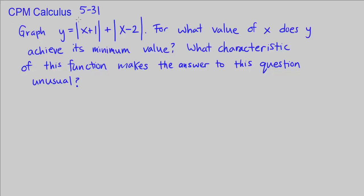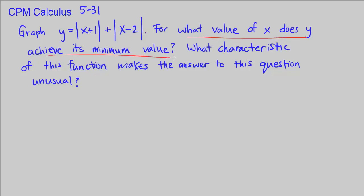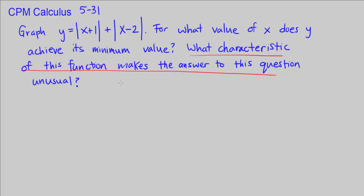This is CPM Calculus Chapter 5, number 31. We're asked to graph the absolute value of x plus 1 plus the absolute value of x minus 2, then answer: for what value of x does y achieve its minimum value? Also, what characteristic of this function makes the answer to this question unusual?